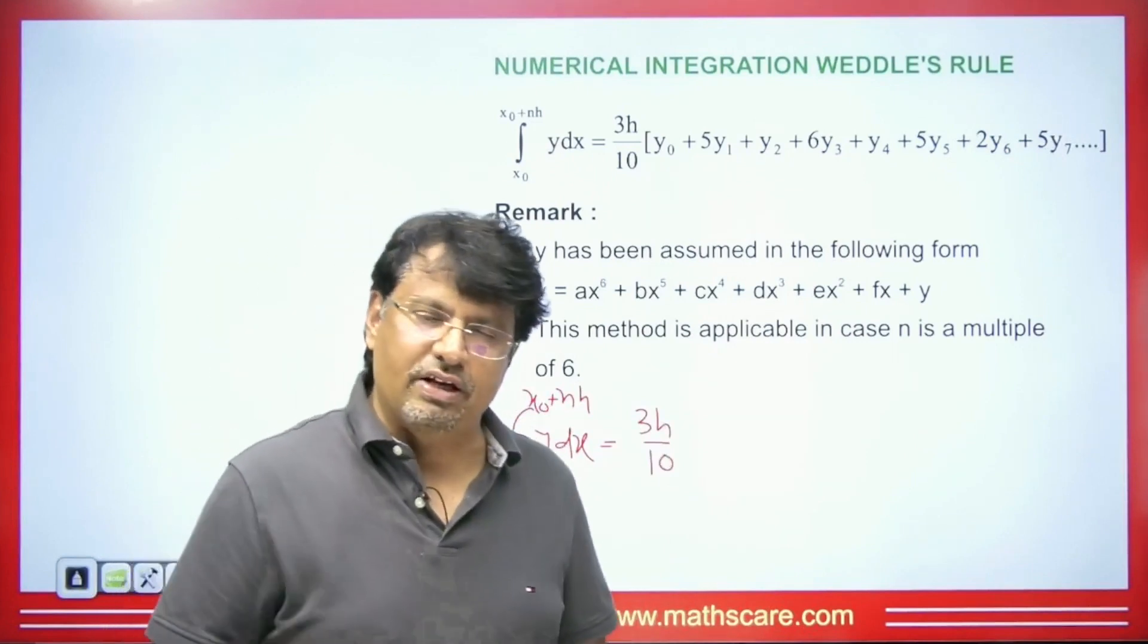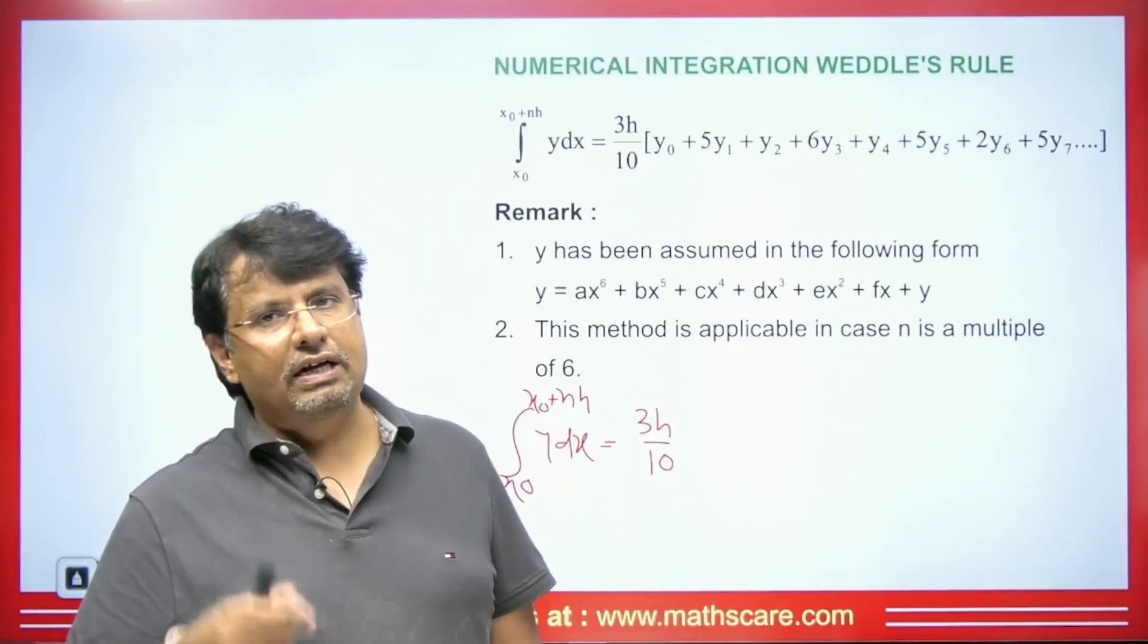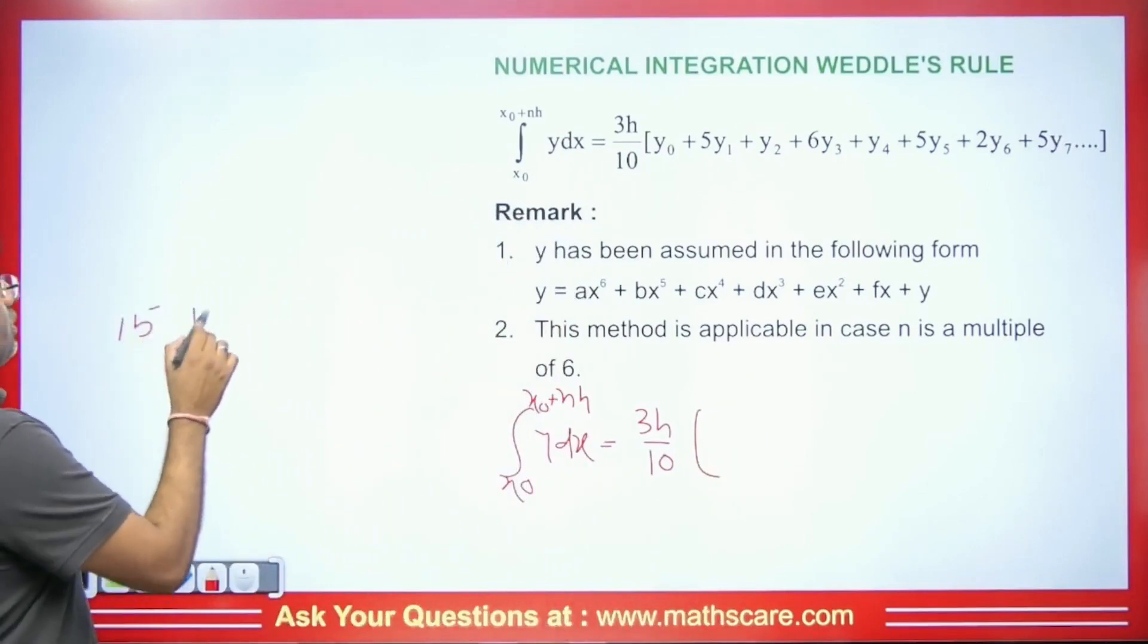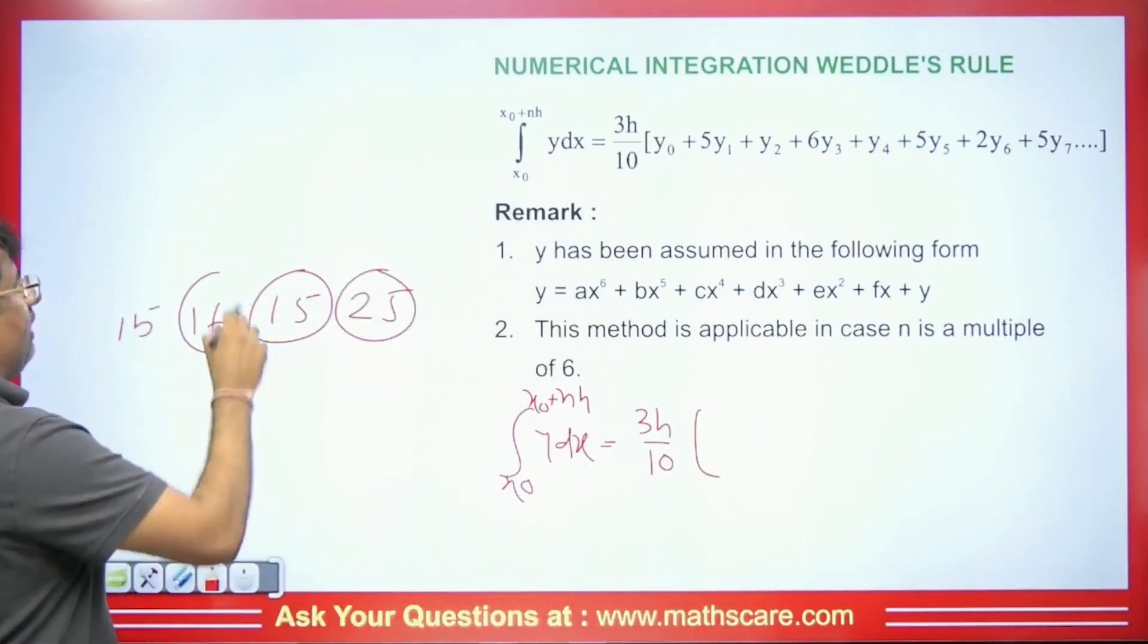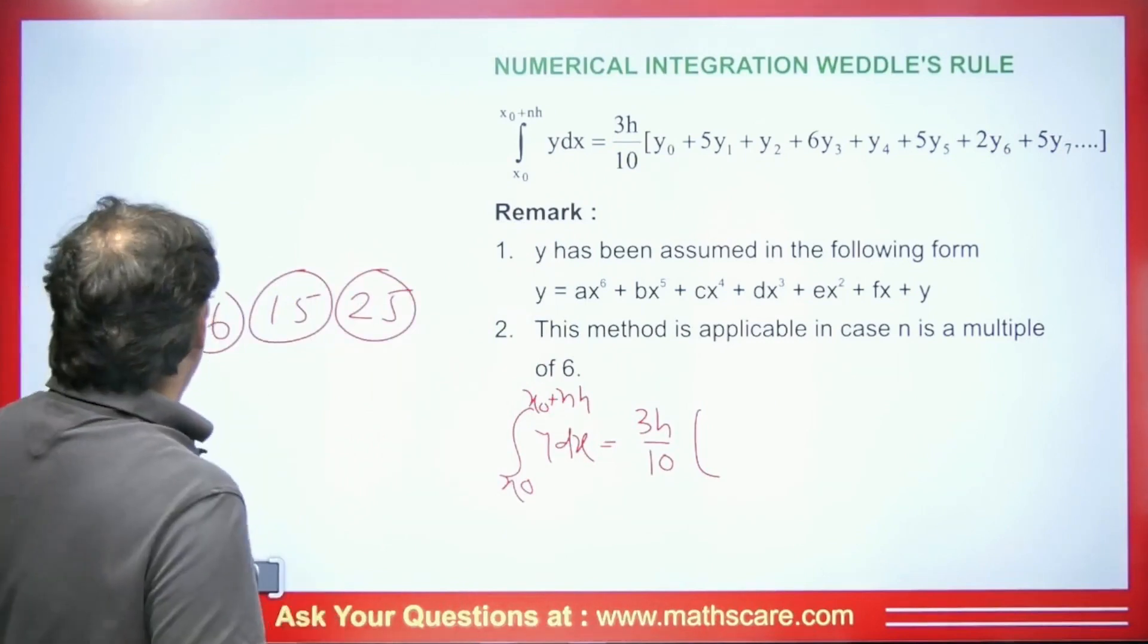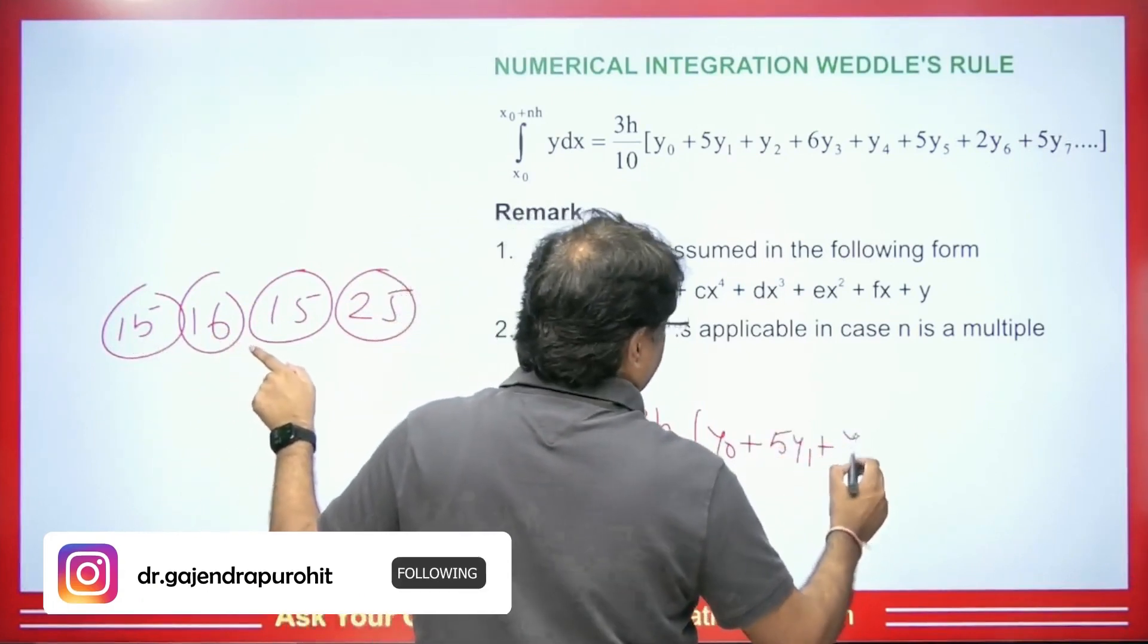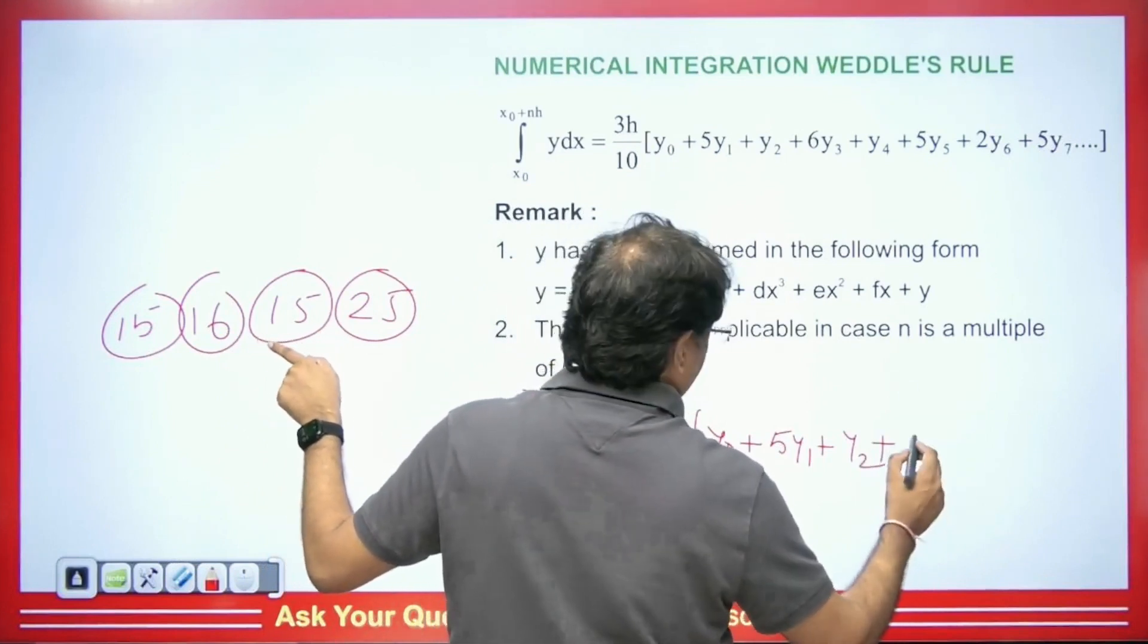Normally we have h/3 in Simpson's 1/3 rule, 3h/8 in 3/8, and in Weddle's rule it's 3h/10. Remembering this formula may be a bit difficult for you, so I am telling you something. Remember this: 15, 16, 15, 25. If you remember this, then the formula will be very easy for you. This means that the coefficient of y₀ is 1. And as you can see on the screen, y₁ coefficient is 5, while y₂ coefficient is 1, and y₃ coefficient is 6.